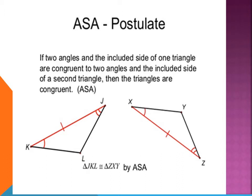In this topic, we will discuss the ASA Congruence Rule. If two angles and the included side of one triangle are congruent to two angles and the included side of a second triangle, then the triangles are congruent by ASA Congruence Rule.